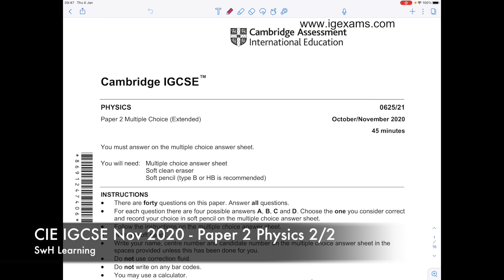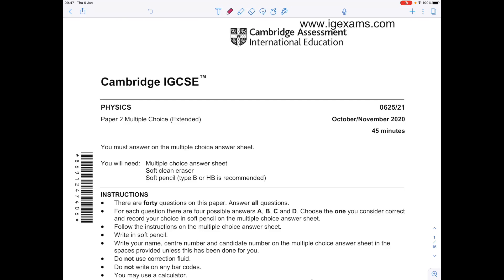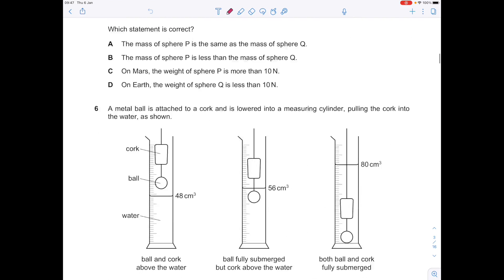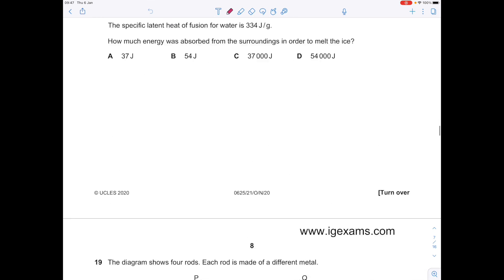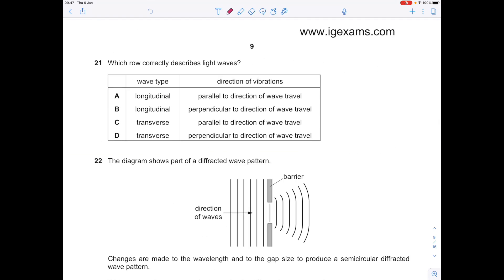Today I'm answering the second half of this Cambridge IGCSE Physics paper, the multiple choice section. We're going to start with question 21. Watch my other video for questions 1 to 20. Which row correctly describes light waves?